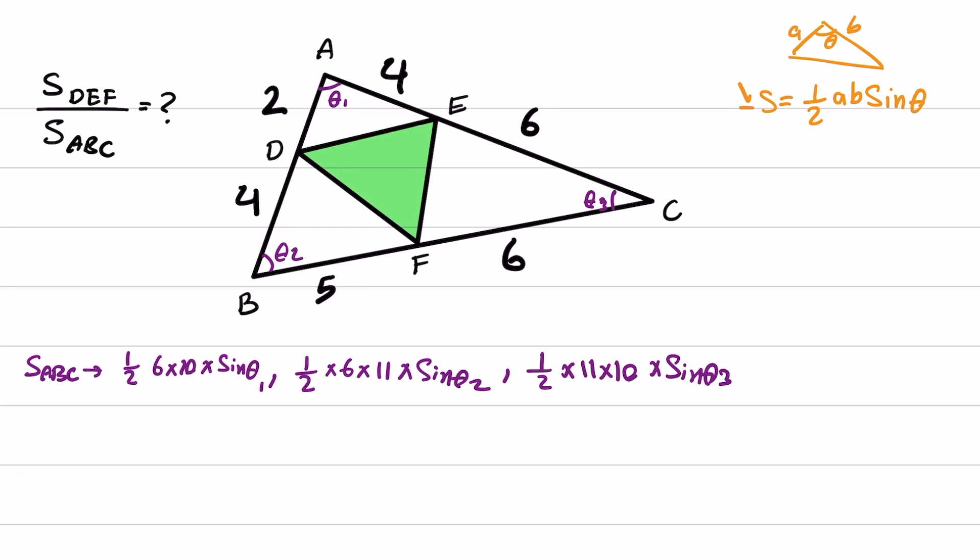So all of them are equal. And if I equate these terms with each other, I can obtain sine theta 2 in terms of sine theta 1. Also sine theta 3 in terms of sine theta 1. You will see why this is useful. So if I equate these 2 by 2, sine theta 2 will be equal to 10/11 sine theta 1.